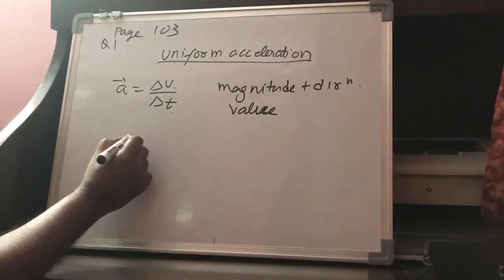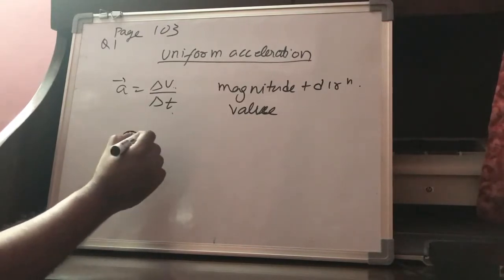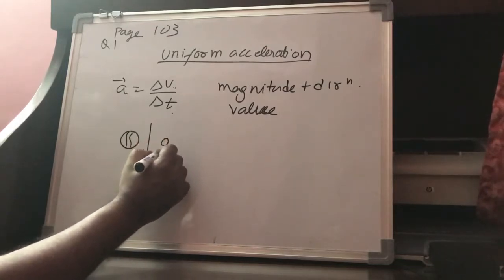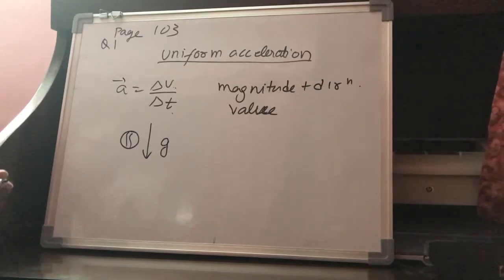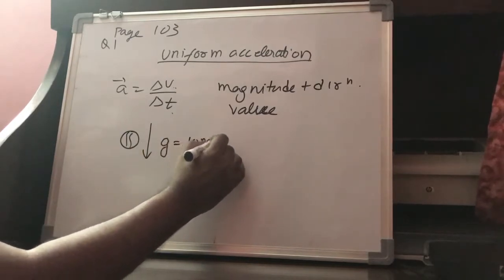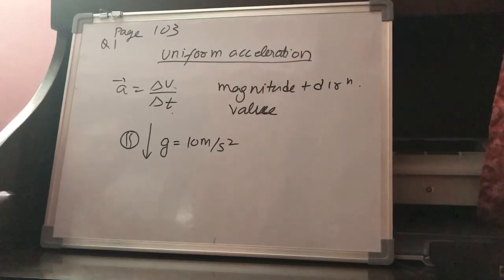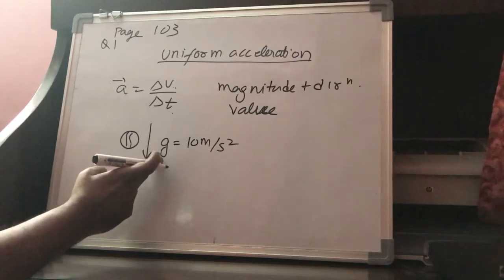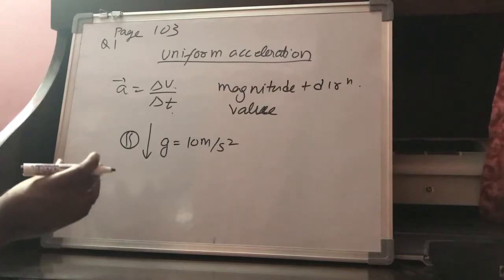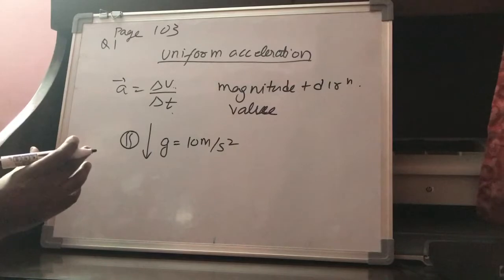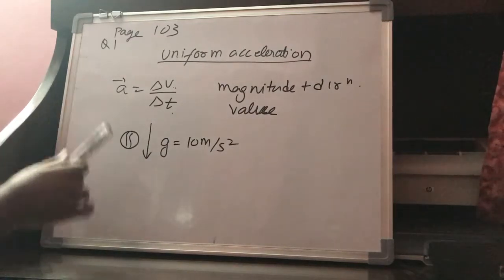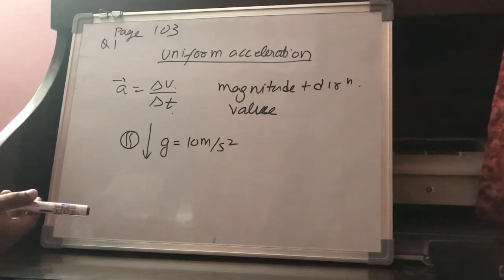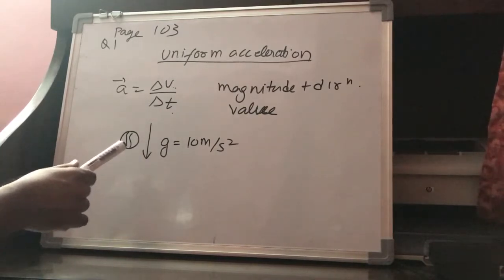For example, consider a ball falling freely. When the ball falls freely, it experiences an acceleration represented by G, which is calculated as 10 meters per second squared. The value of acceleration due to gravity remains the same throughout the motion, and its direction always remains downward. So this ball is having uniformly accelerated motion.